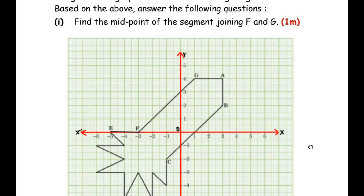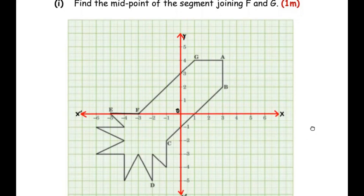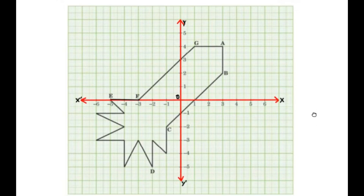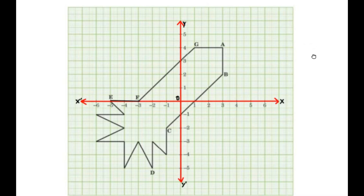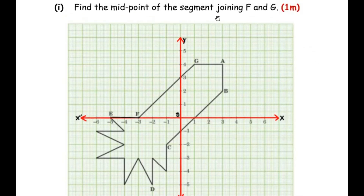Before we begin, let us understand the question. Ryan is dreaming of becoming an astronaut, so he started designing his own rockets on graph sheets. This is one of the designs he has made, and here we can see that he has labeled each point as A, B, C, D, and so on. We need to find out the midpoint of the segment joining F and G. Here is point F and here is point G, so let us write down the coordinates of F and G first.